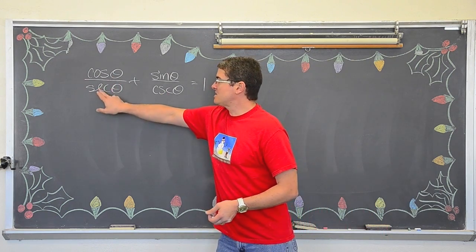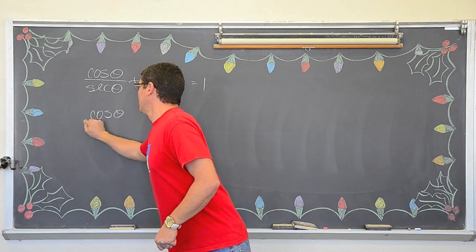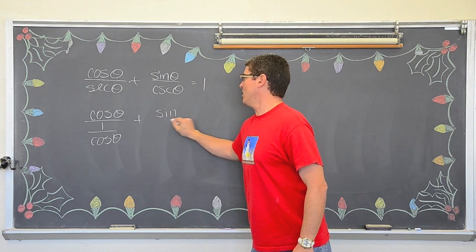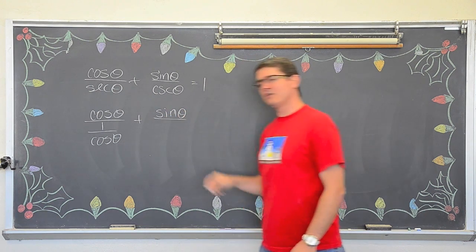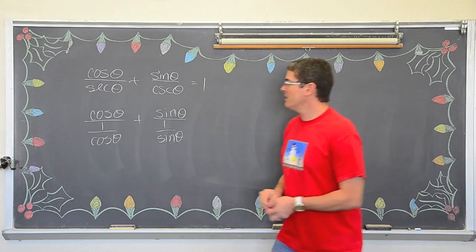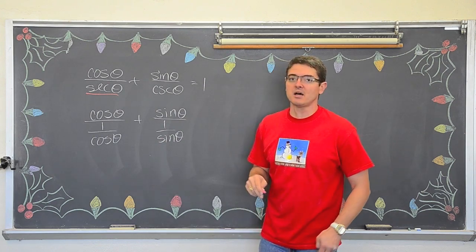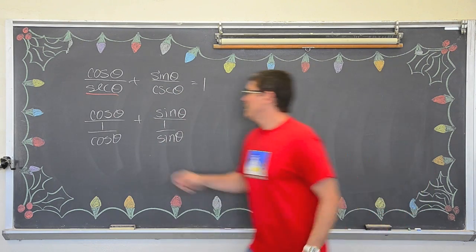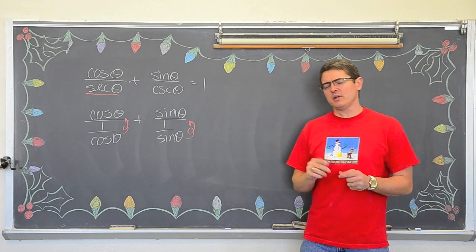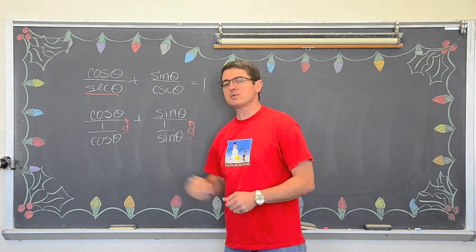Well secant is one over cosine. So cosine theta over one over cosine theta. You see what I am doing? I am taking out secant and replacing it with its reciprocal identity. And the same thing with cosecant. Now you can take these bottom fractions and flip them up. You know, you can't really, there really truly is no division of fractions. You multiply by the reciprocal of the second fraction. Well that is always going to be your denominator.